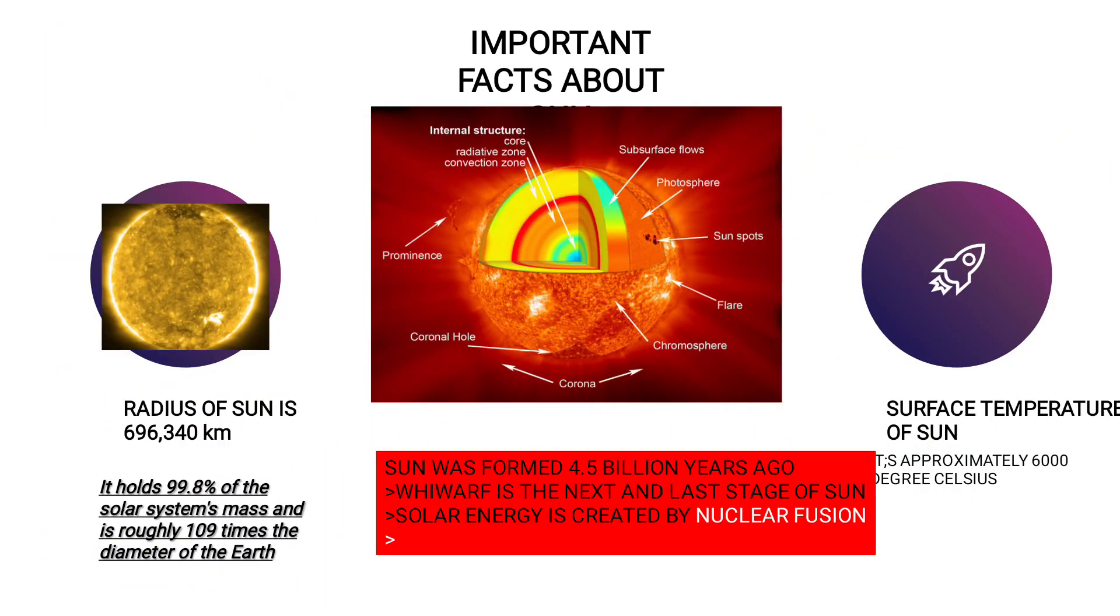These are important facts regarding sun. The radius of the sun is 696,340 km. Do memorize these numbers because these numbers are directly asked in examinations. Radius of the sun is 696,340 km.